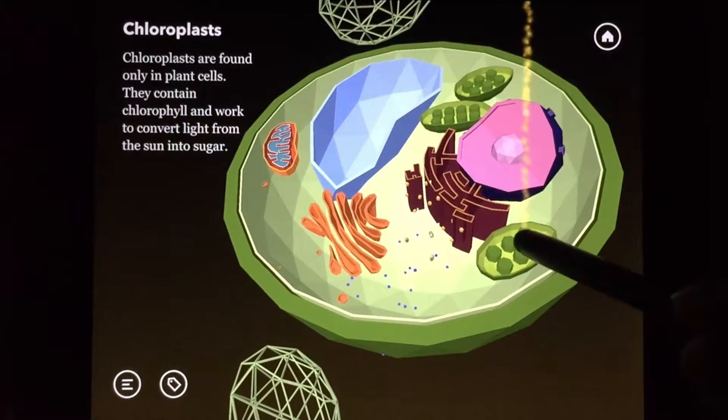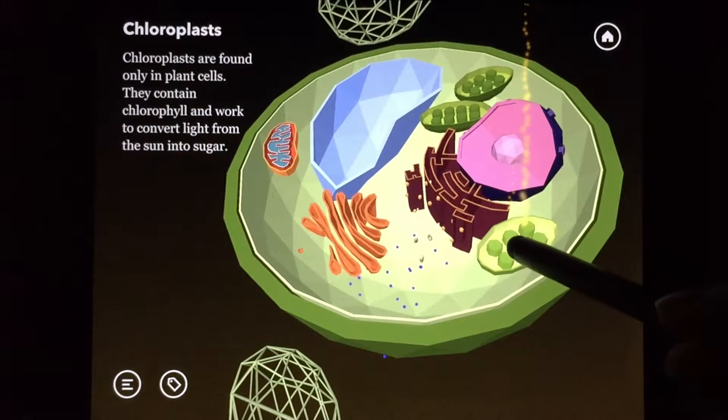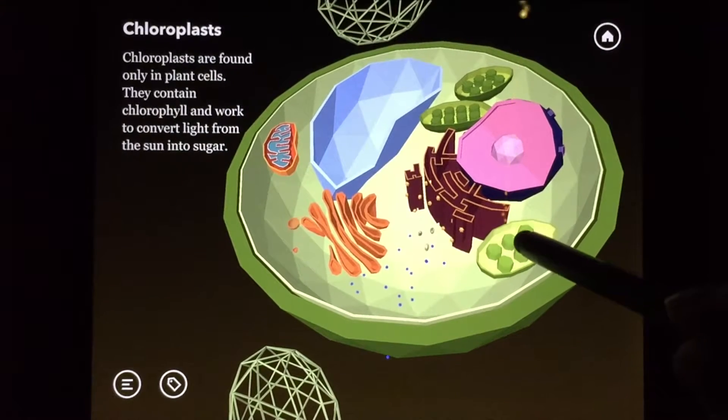Leaves contain chloroplasts which contain chlorophyll. Within the chloroplasts are small disc-like structures called thylakoids.